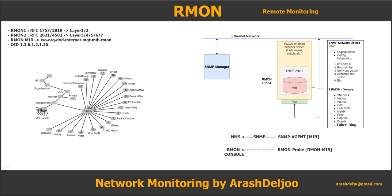These probes act as servers, and the network management application — the RMON console — communicates with them and acts as a client. With both agent configuration and data collection using SNMP, RMON is designed to operate differently than other SNMP-based systems. Information is only transmitted to the management application when required, instead of continuous polling and monitoring.